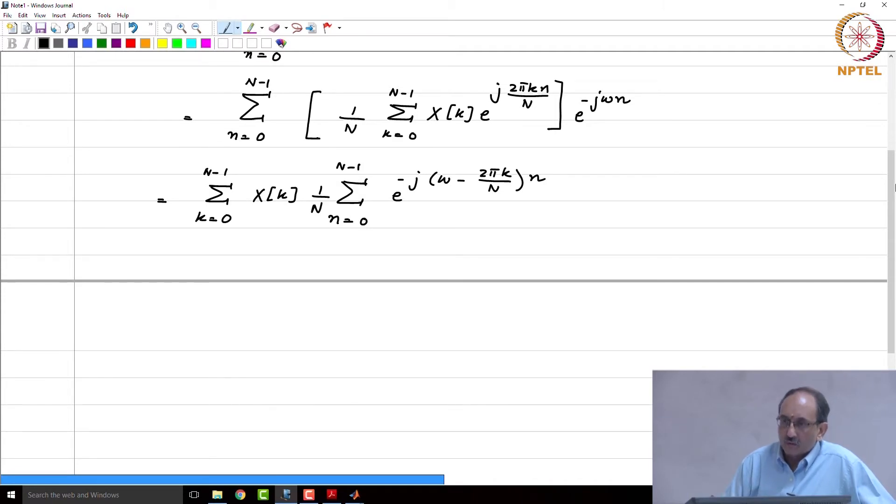So, all I have done is interchange these two summations, and this can be written as k going from 0 to N minus 1, X of k, and this is P of omega minus 2 pi k by N.